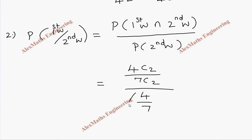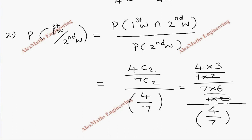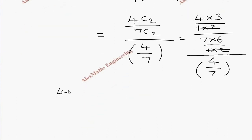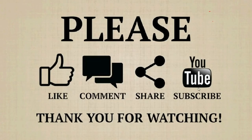Expanding the numerator: 4C2 = (4×3)/(1×2) and 7C2 = (7×6)/(1×2). Dividing by 4/7 means multiplying by 7/4. We cancel the 7s and the 4s, leaving 3/6, which simplifies to 1/2. So the conditional probability is 1/2.